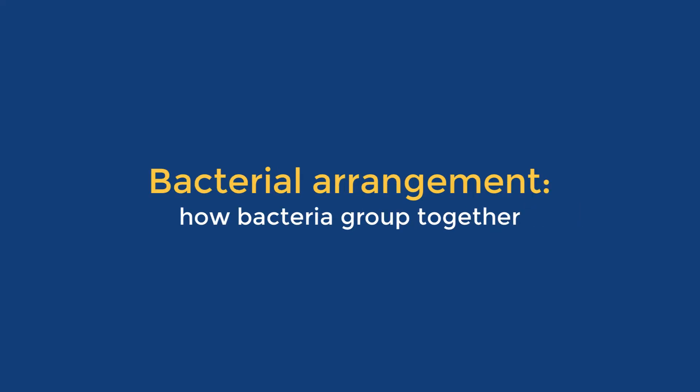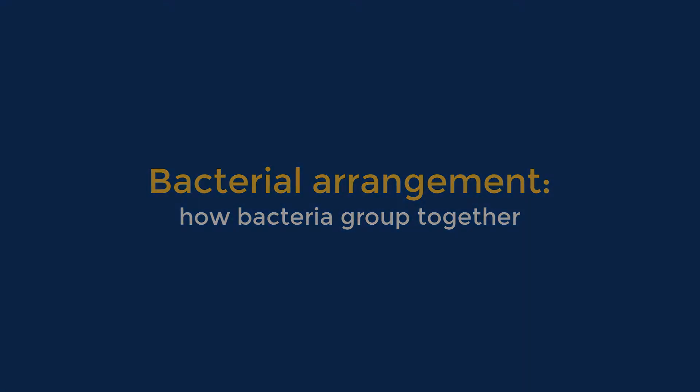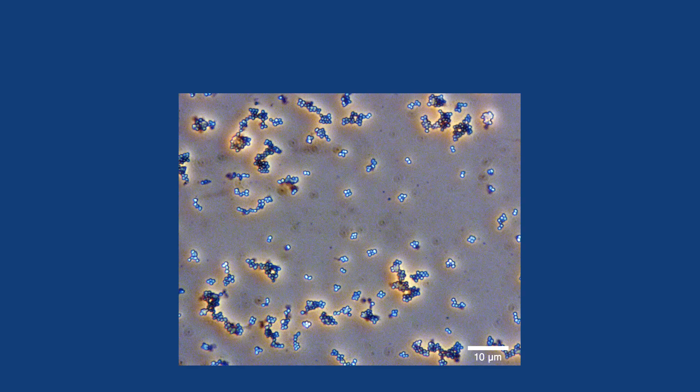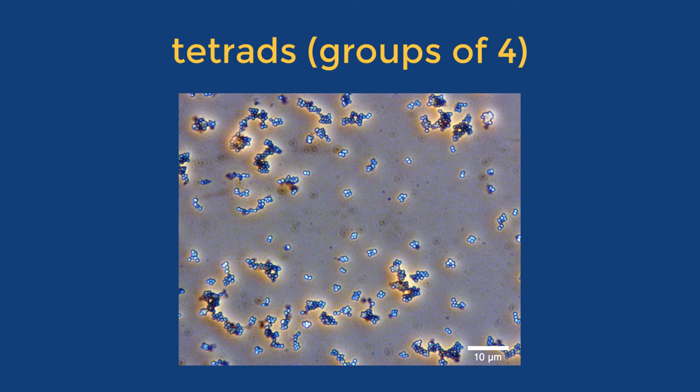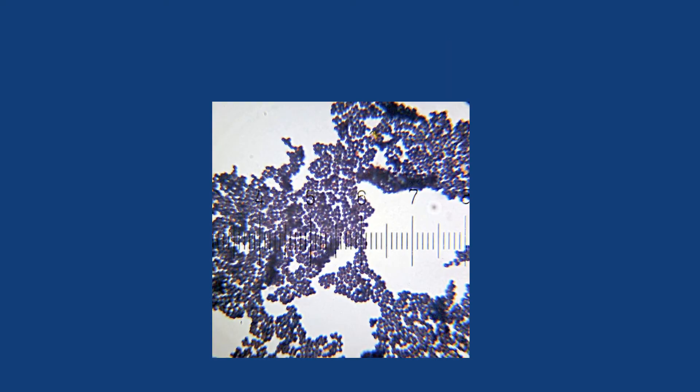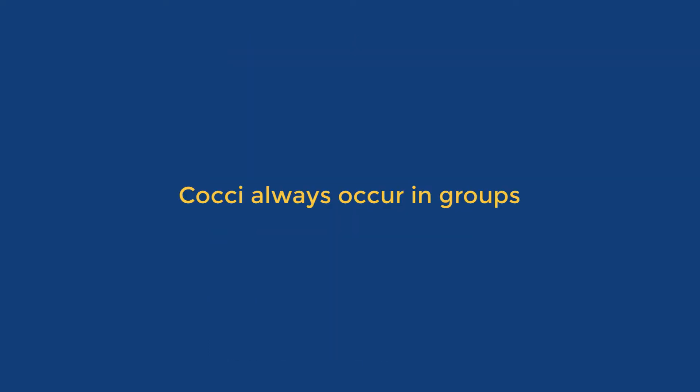Bacteria tend to group together in specific ways. Cocci can occur as diplococci in pairs, streptococci—long chains of bacteria—tetrads, clumps of four cocci, sarcinae, cuboidal, or staphylococci, large groups of bacteria in a grape-like or lace-like arrangement. Cocci are not found as singles.